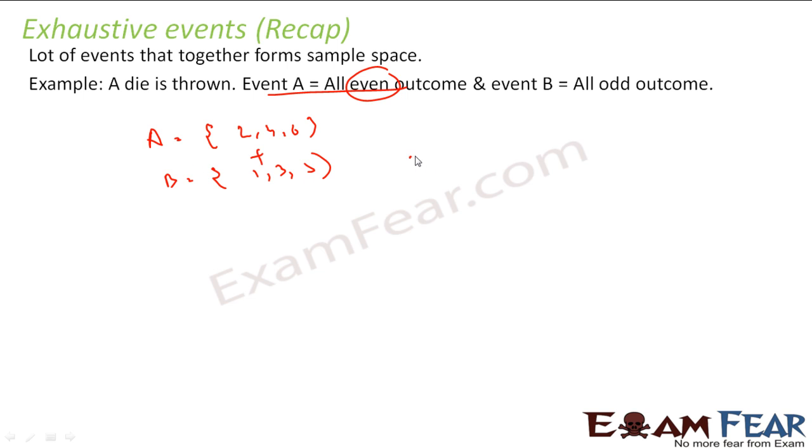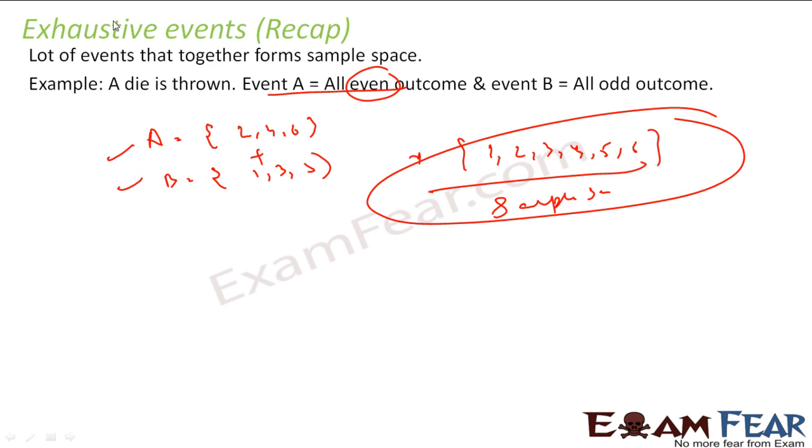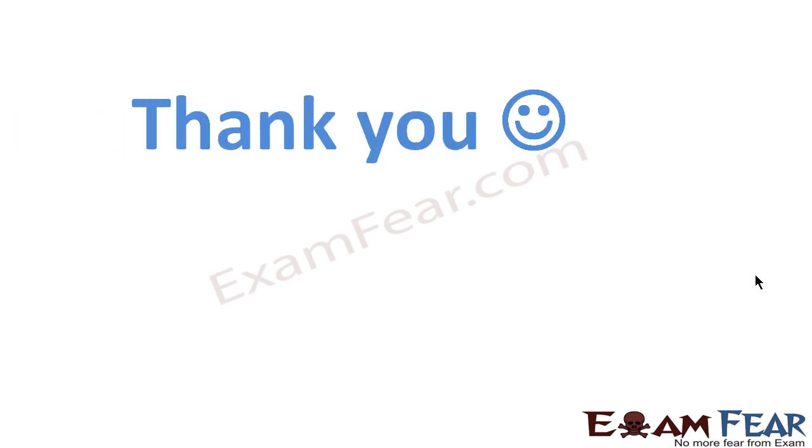You add these two, what you get is one, two, three, four, five, six, and you see this is nothing but my sample space. So you add n number of events and make sure that if you add all of them the output what you get is sample space, then those events are called exhaustive events. N number of events that covers the whole sample space.